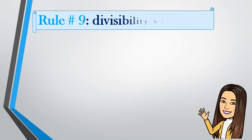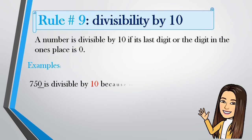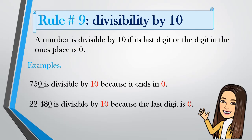Rule number 9: Divisibility by 10. A number is divisible by 10 if its last digit, or the digit in the ones place, is 0. Example: 750 is divisible by 10 because it ends in 0. Another example: 22,480 is divisible by 10 because the last digit is 0.